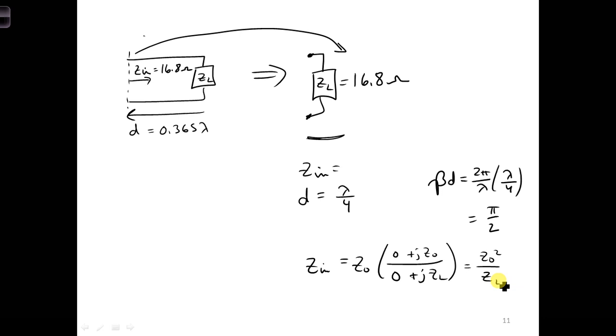What this means is that for this length of transmission line, the input impedance only depends on the load impedance ZL and the characteristic impedance of the quarter wavelength section of transmission line. And since we said D equals lambda over four, that's a quarter wavelength.